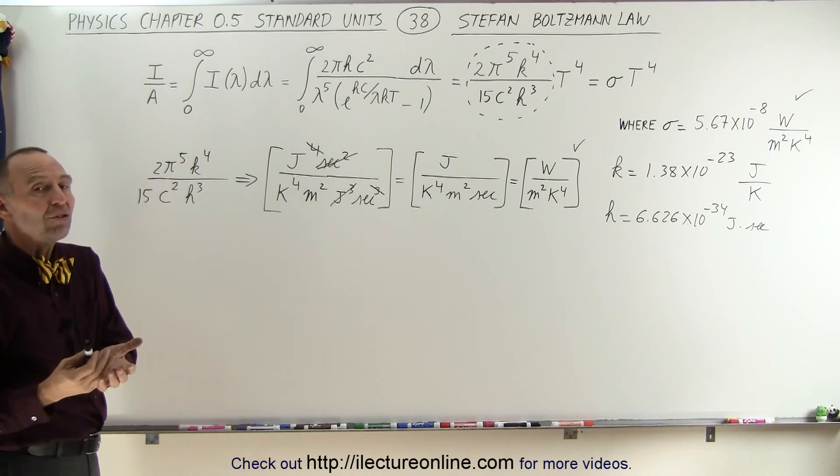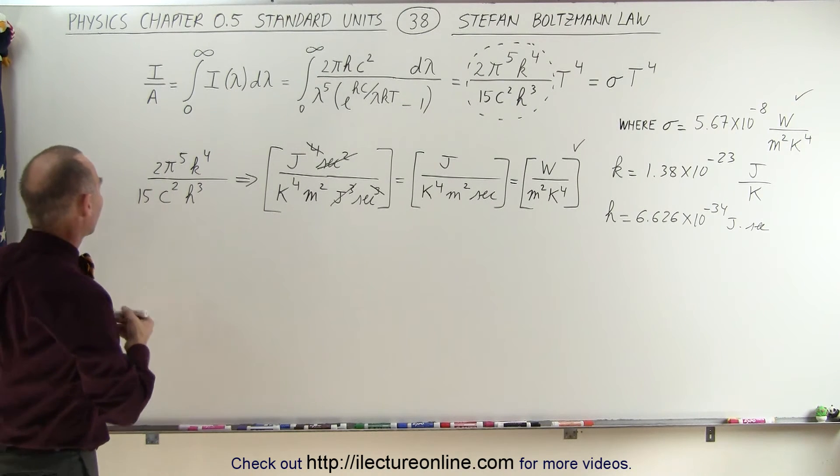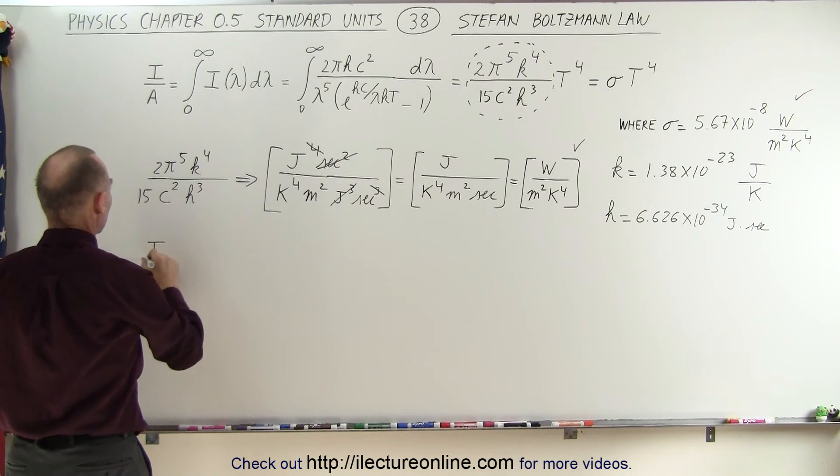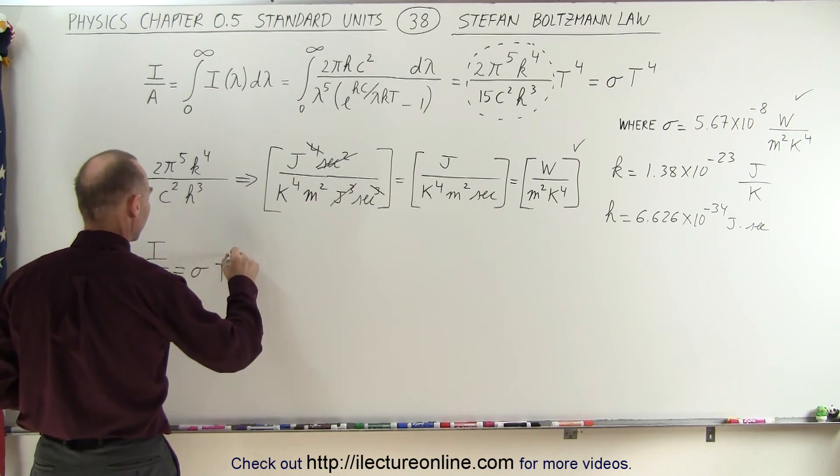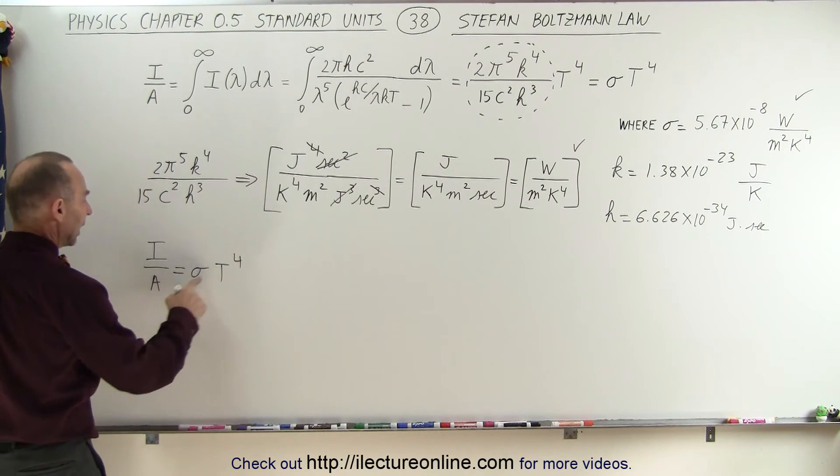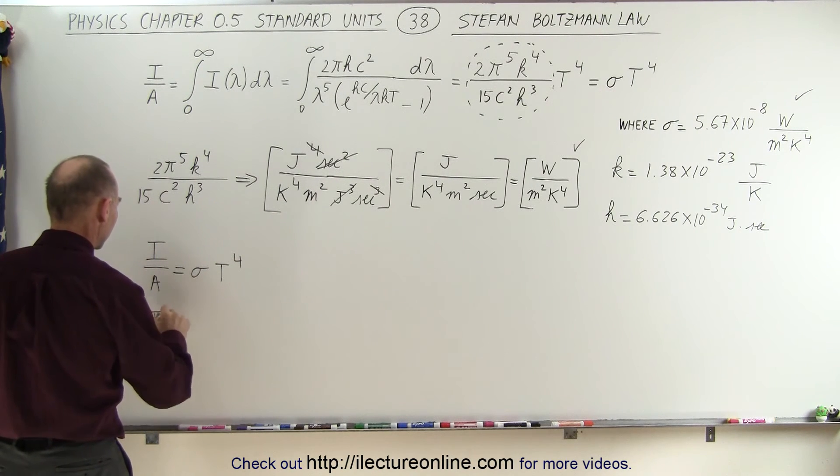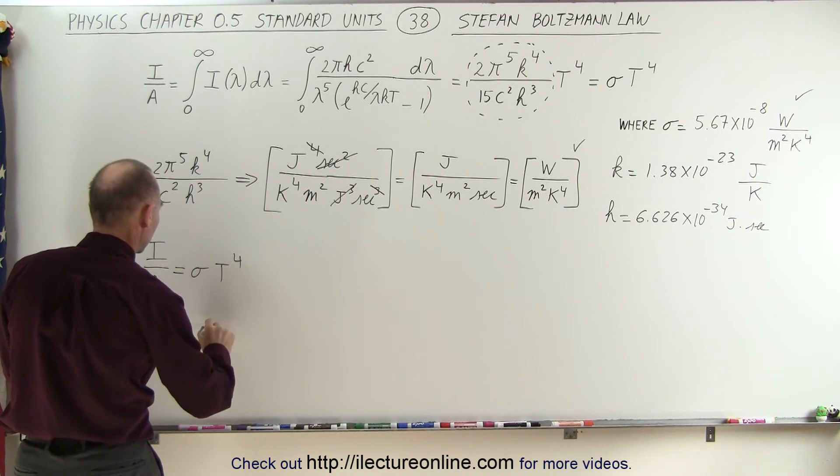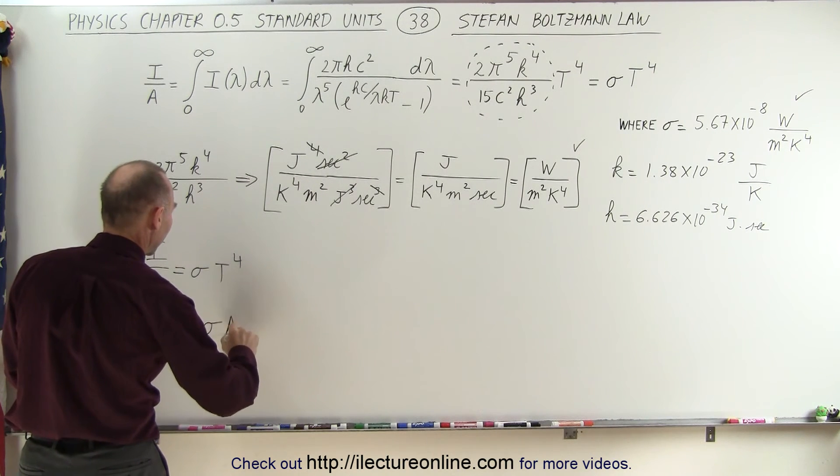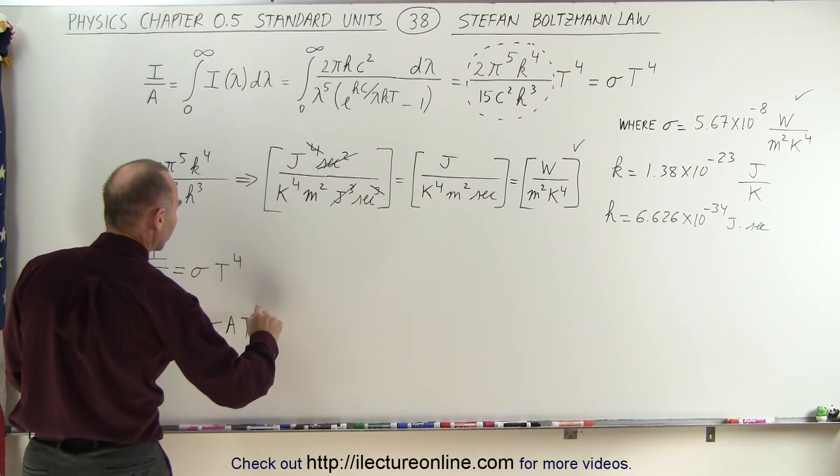Now, what about the equation? Here we have the intensity per unit area is equal to the Stefan-Boltzmann constant times temperature to the fourth power. When we bring the area over here, we can say that the total energy radiated by an object is equal to the Stefan-Boltzmann constant times the surface area times the temperature to the fourth power.